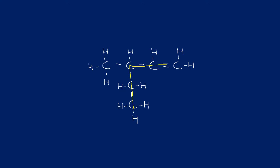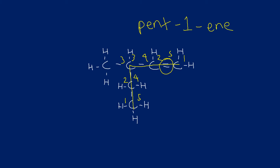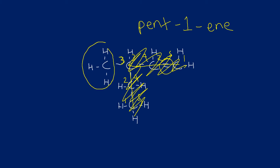Next example: the longest possible chain is five carbons — 1, 2, 3, 4, 5 — and it contains the functional group, so it's pent-ene. Numbering from either end: 1, 2, 3, 4, 5. The functional group must have the lowest number, so this is pent-1-ene and not pent-4-ene. There is a side chain — a methyl group. Confirming the numbering: with carbon one at this end, the methyl is on carbon three. So the full name is 3-methylpent-1-ene.